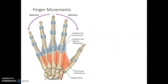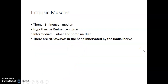We have intrinsic muscles found in the hand. You can appreciate the first dorsal interosseous muscle here. Extrinsic muscles are those in the forearm that insert onto the bones in the hand. The intrinsic muscles include those forming the thenar eminence, innervated by the median nerve; those in the hypothenar eminence, innervated by the ulnar nerve; and the intermediate group, innervated by the ulnar and some parts by the median nerve.